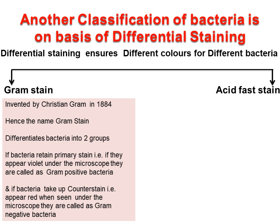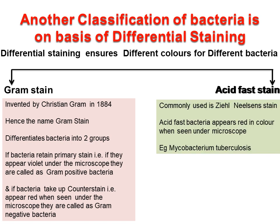And if bacteria take up the counter stain — that is, appear red when seen under the microscope — they are called gram-negative bacteria. The second staining is acid-fast staining. The commonly used stain is the Ziehl-Neelsen stain. Acid-fast bacteria appear red in color when seen under the microscope. Example: Mycobacterium tuberculosis.